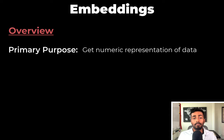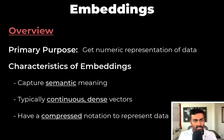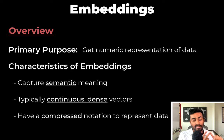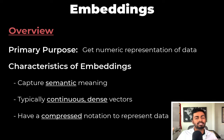Now, while the primary purpose of these embeddings is to get a numeric representation of data, they have other characteristics as well. They capture the semantic meaning of data. The embeddings are typically continuous dense vectors, and embeddings have a compressed notation to represent data. Let's talk about each of these in a little bit more detail.